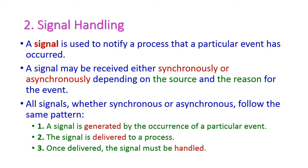The second issue is signal handling. A signal is used to notify a process that a particular event has occurred — we receive a notification called a signal. Signals are of two types: synchronous and asynchronous. The signal type depends on the source and reason for the event, so based on the event, we receive either a synchronous or asynchronous signal.